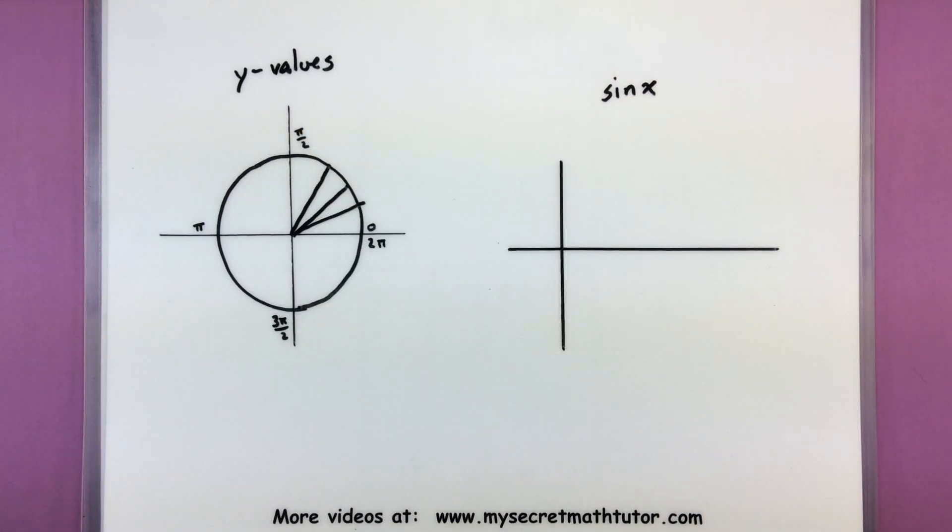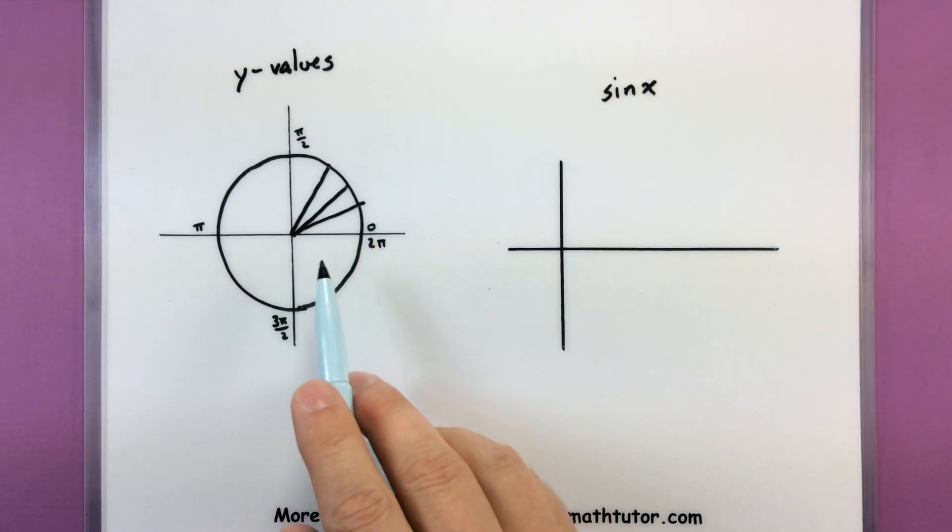The process would be exactly the same if you were working with cosine, but then you'd work with the x values. So, let's see what we get for some of our key values.